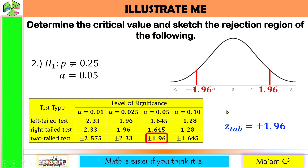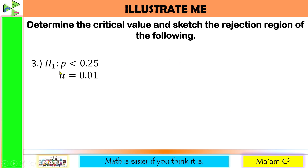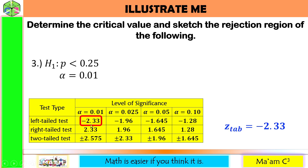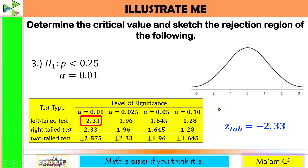Shade the tails of the curve. Last one: P is less than 0.25 with alpha equals 0.01. Our Z critical values — this is left-tailed at 0.01 — so our Z-tab is negative 2.33. Let us sketch the curve. Negative 2.33 somewhere here, label it, and shade the left tail.